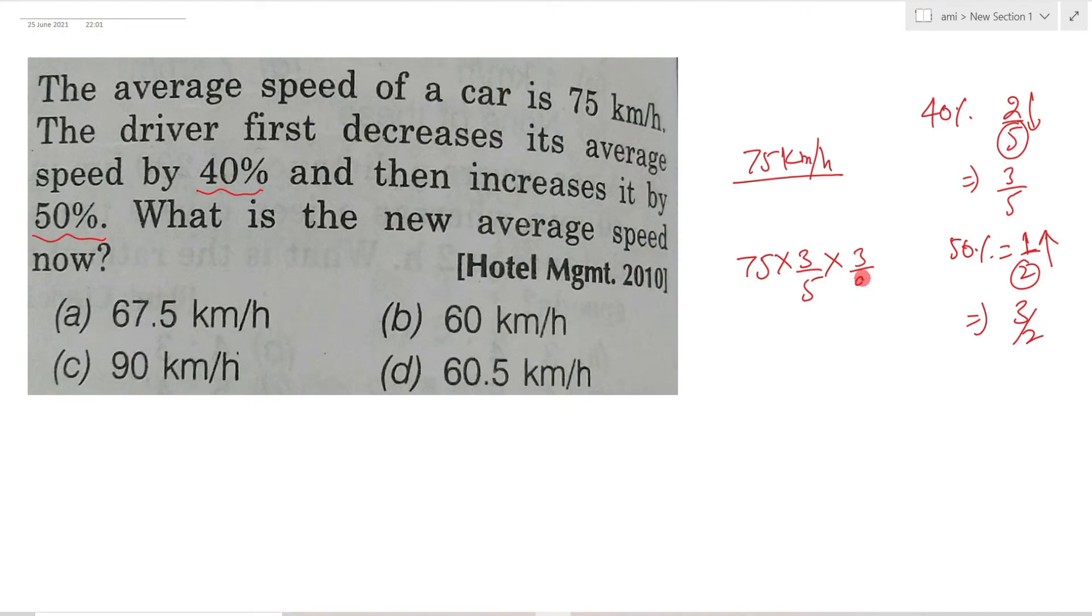Multiply by 3/2. This gives 15/2, which equals 7.5. Ultimately, 7.5 times 9 equals 67.5 kilometers per hour.